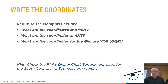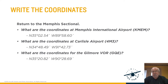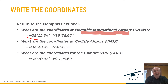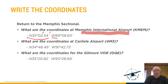Here are some examples of latitude and longitude coordinates. For Memphis International, we have North 35 degrees, 2 minutes, 54 seconds — so the northern hemisphere, right, the United States being somewhere in that vicinity. Then West 89 degrees, 58 minutes, and 60 seconds — we're west of the prime meridian. So that's basically how it goes; by using that, we can find all these locations. And like I said, the Chart Supplement US will also let you find those coordinates.